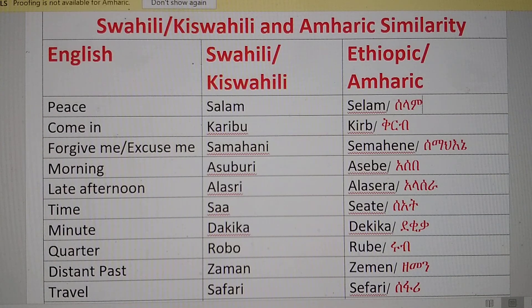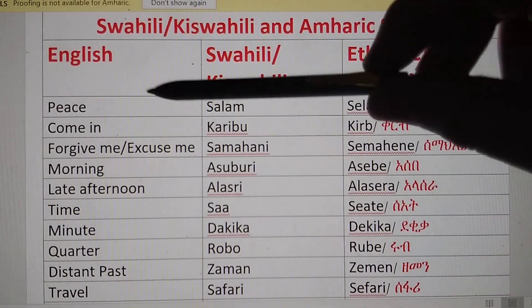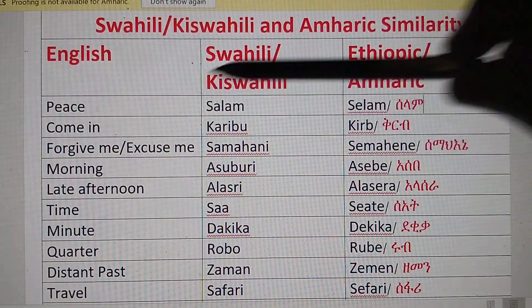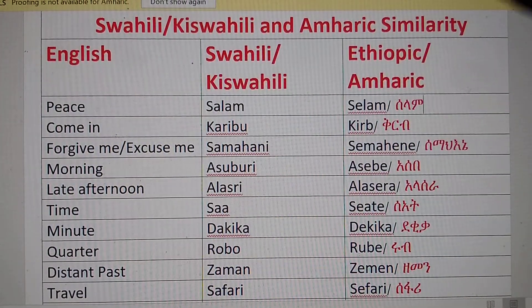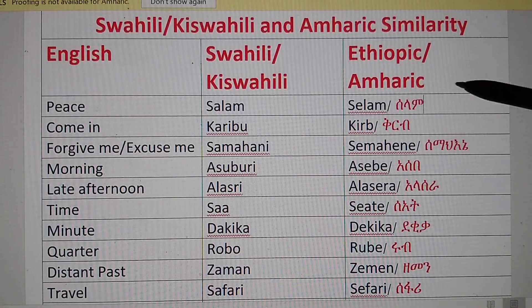So I have collected some words which are similar. Let's see. The first one is 'peace.' In Swahili it is 'Salam,' and in Amharic it is 'Sela.'